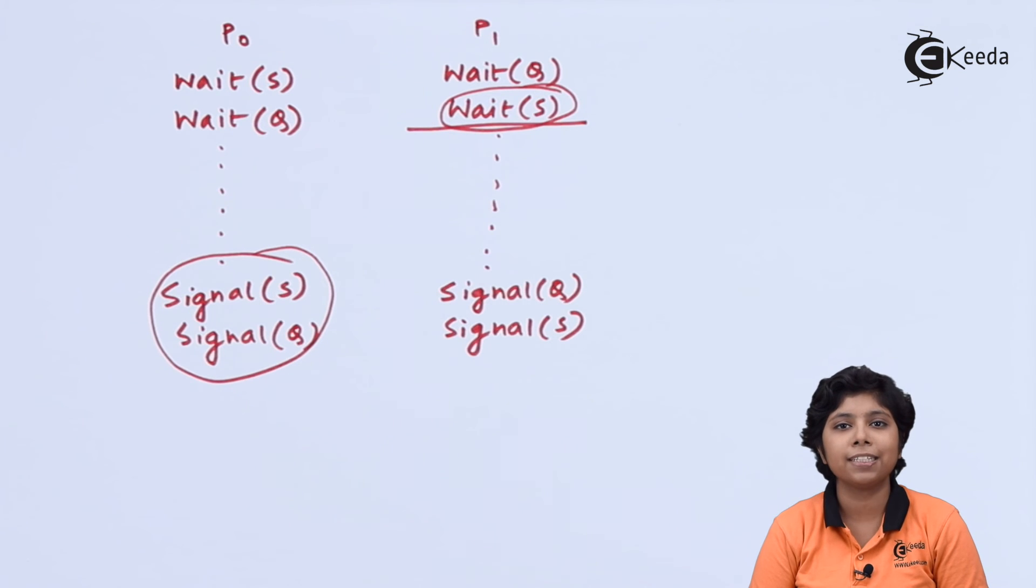A low priority process inherits the priority from the higher one until it relinquishes the resources that is needed by the high priority process. For our example, L will acquire the priority and inherit it directly from H when it is accessing the resource R. After that, L is finished with the resource R, it will revert to its original priority. Now that H would be available with the resources R, not M would be run next after finishing L.